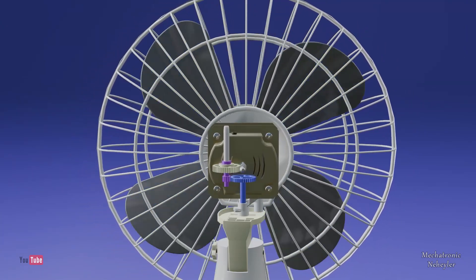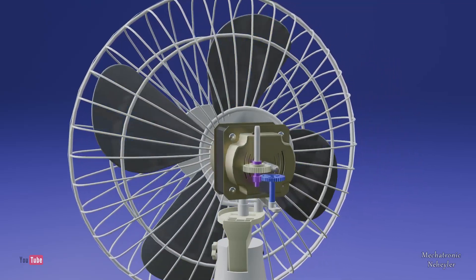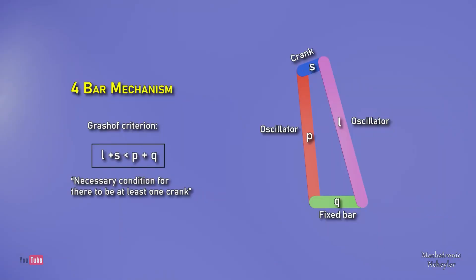But to achieve this movement, not only a set of gears is enough, but a bar mechanism is required to achieve the reciprocating movement. All this is based on the principle of a four-bar crank oscillator mechanism, where the blue bar is the crank that makes a rotating movement and therefore makes the other bars make a side-to-side movement with the green bar fixed.